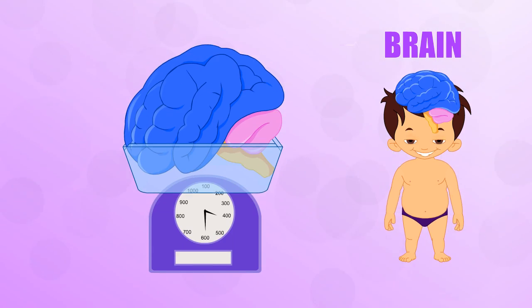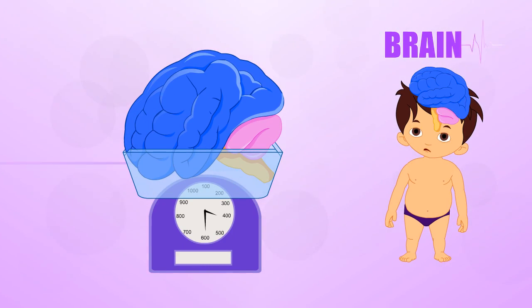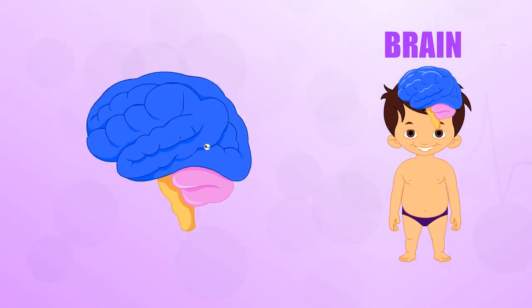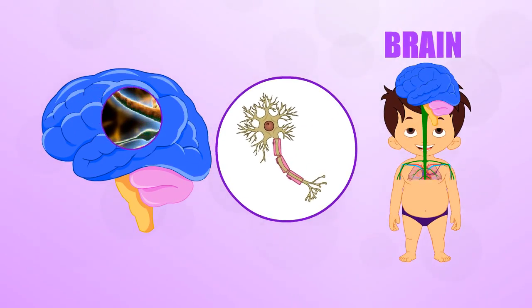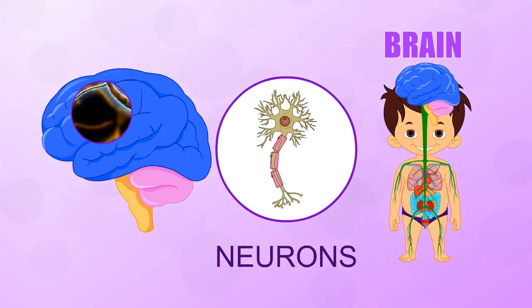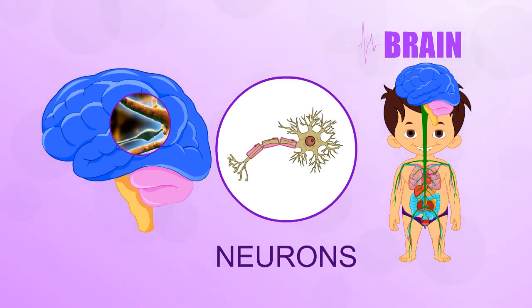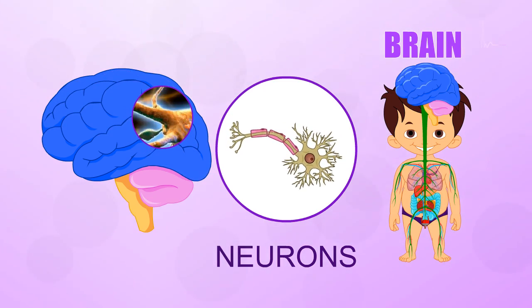Not bad for something that looks like a big wrinkly grey sponge and only weighs about 1.3 kg. Your brain contains billions of nerve cells called neurons that carry signals to and from different parts of your body through your central nervous system.